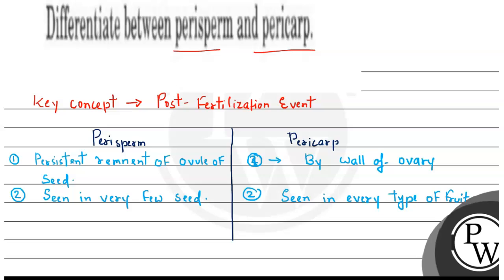The third difference is perisperm is the part of seed, but pericarp is the part of fruit.